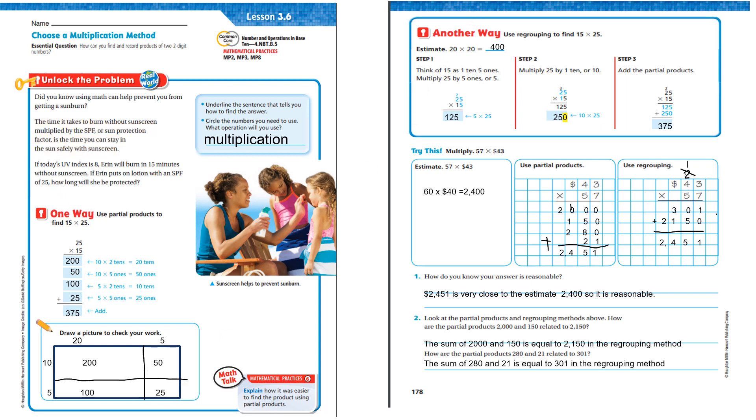Now, let's look at another way. We're going to use regrouping to find 15 times 25. We're going to do the estimate as 20 times 20 is 400. Our step one says think of 15 as 1 10 and 5 1s. Multiply 25 times 5. So, we're going to go 5 times 5 is 25. Carry that 2. 5 times 2 is 10. Add 2 is 12.